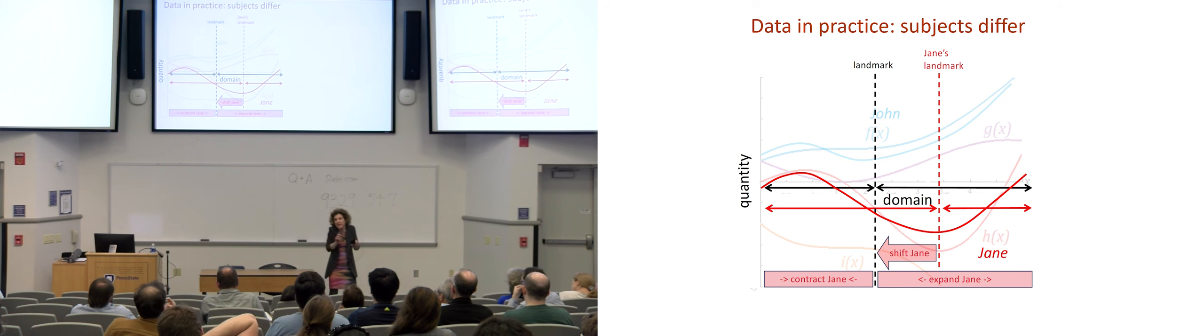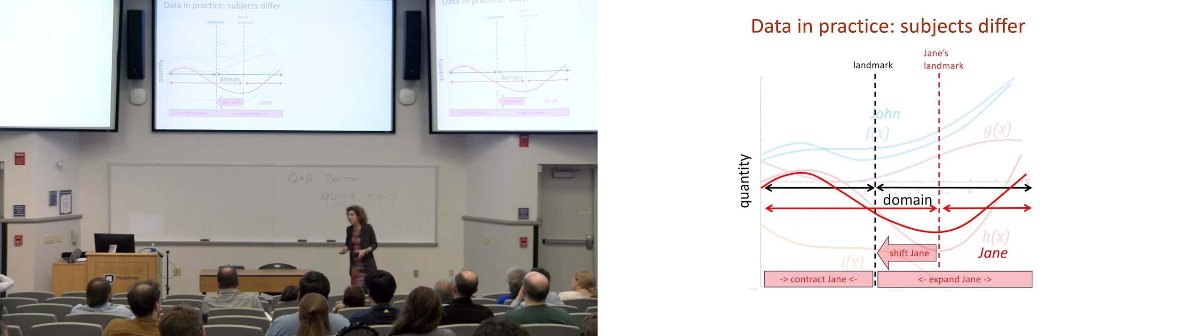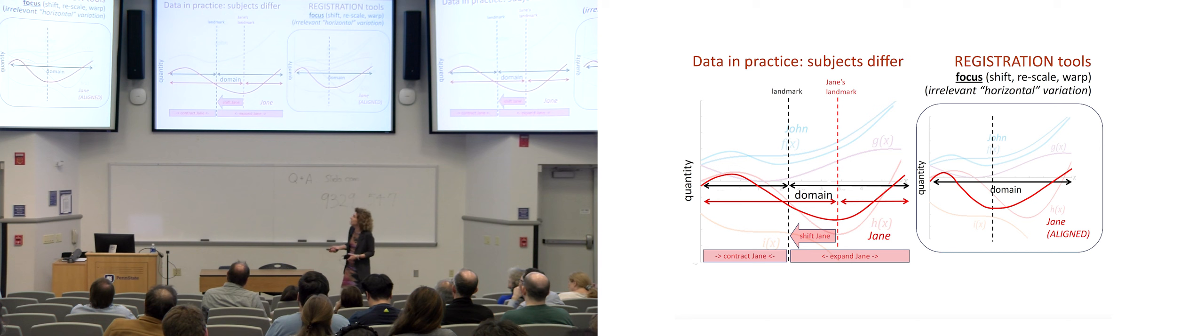Now, this could be interesting in and of itself. We may want to study how people differ in terms of when is it that they turn the corner, or not. Maybe we're interested in understanding how oxygenation deteriorates before the landmark and improves afterwards. And the fact that people have different landmarks becomes a confounder, a hindrance.